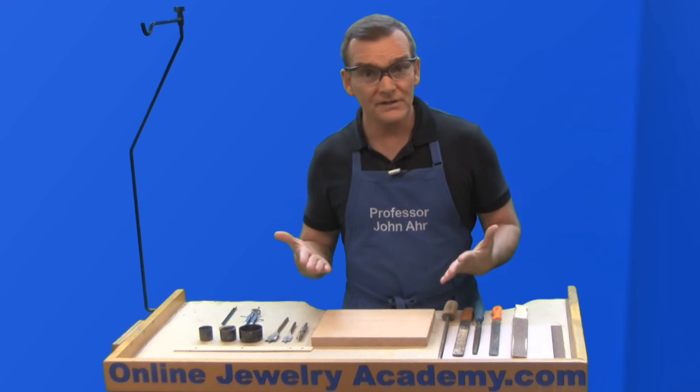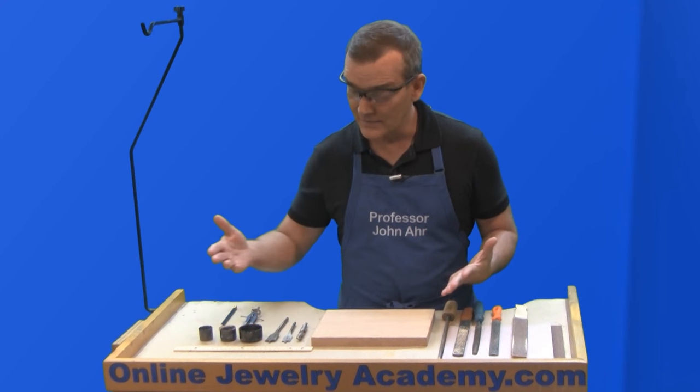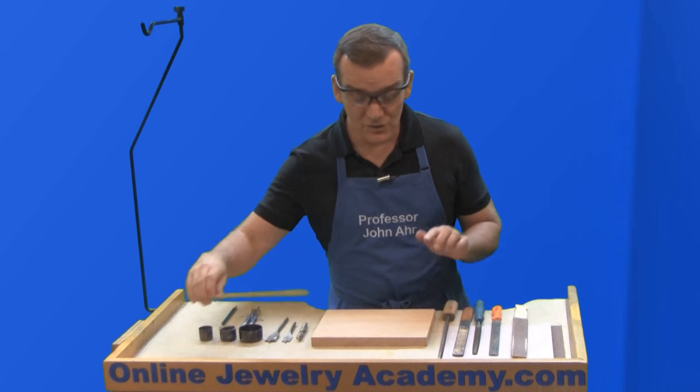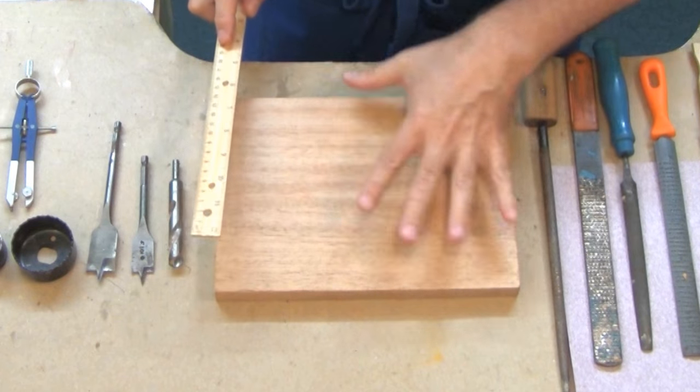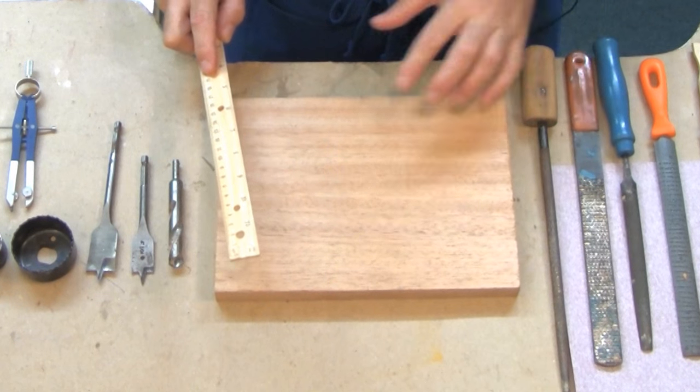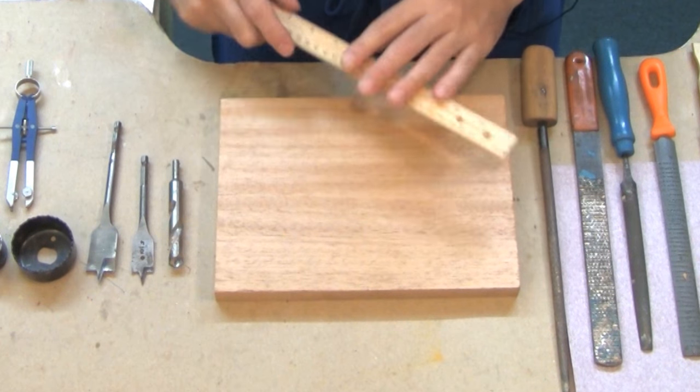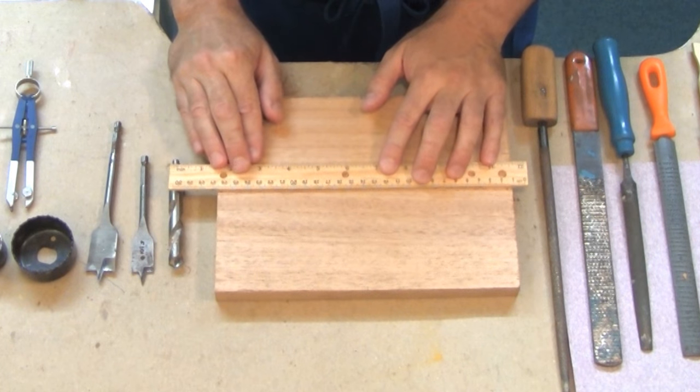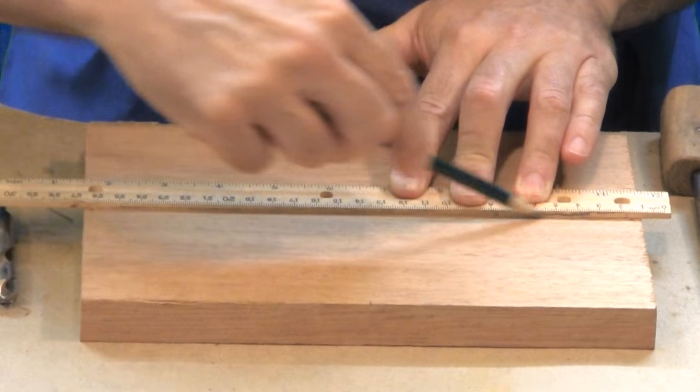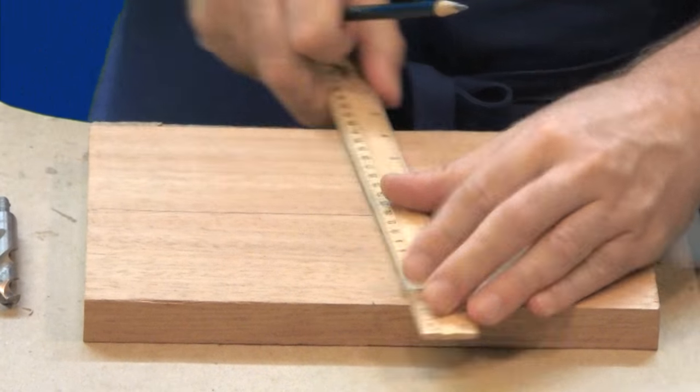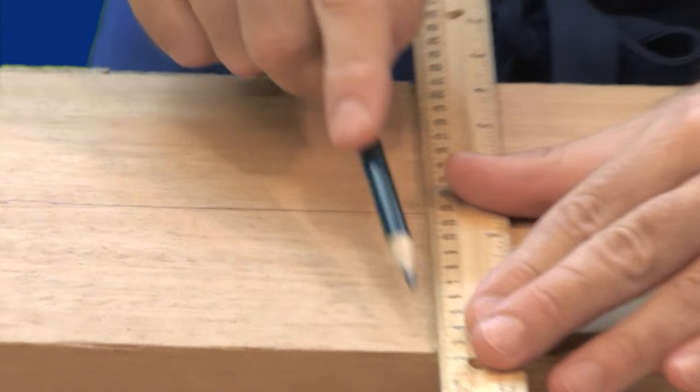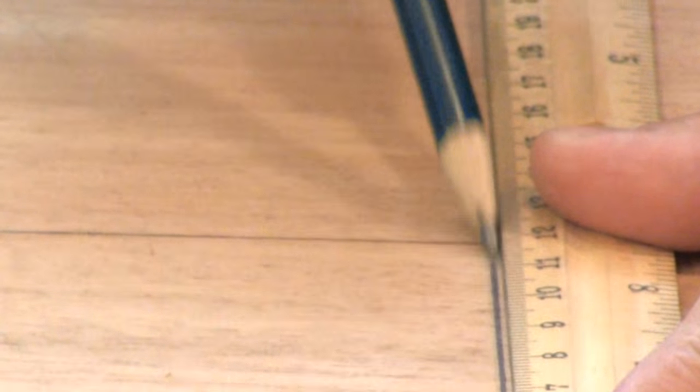All right. So let me show you the first step of getting started on this project. What you need to do is you need to measure to find the center of your five inch by 10 inch board. So I've already marked the board at two and a half and five inches and now I'll draw the lines to find the center point because it's important to know where the center of the board is.